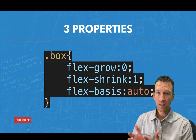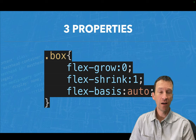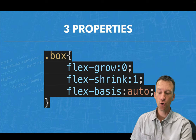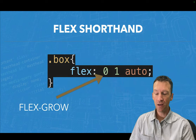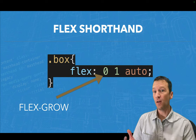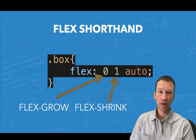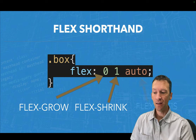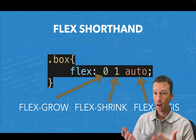Here you can see I've got a simple class called .box and there's just these three properties written out in longhand notation. Most of the time when you're using Flexbox you'll actually write them in shorthand notation, which looks like this. The first property is Flex Grow and the default value is zero. The second value is Flex Shrink with a default of one, and the last property is Flex Basis with a default value of auto.